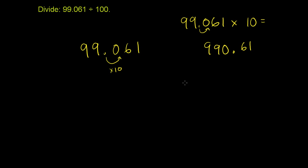If I were to do 99.061 divided by 10, we're going to shift the decimal in the other direction. This is going to be 9.9061.